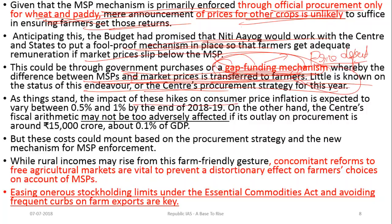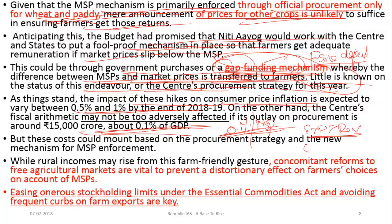The rise in MSP may cause consumer price inflation to increase by about 0.5% to 1% by end of fiscal year 2018-19. However, the fiscal arithmetic of the government will not be significantly affected because this constitutes only 0.1% of GDP. So even though government expenditure increases, it will not substantially worsen the fiscal deficit.